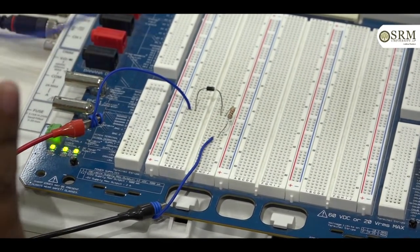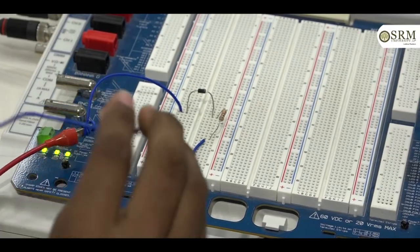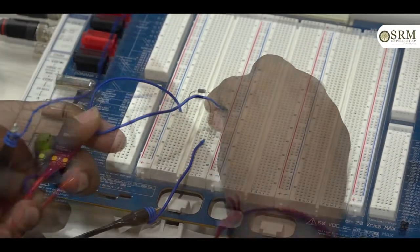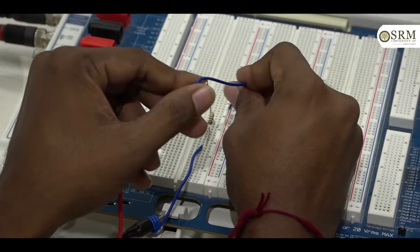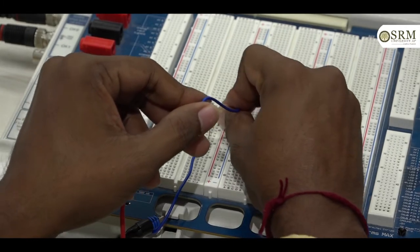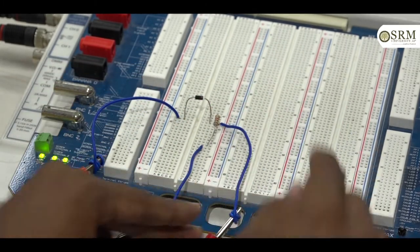For checking output, we are using CRO cathode ray oscilloscope across the resistor. Positive terminal of the CRO is connected across the resistor.